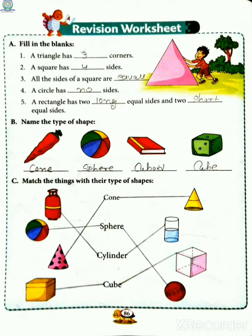So circle has no sides. Number 5: A rectangle has two long equal sides and 2 short equal sides. Yarni rectangle ki do long equal sides hooti hai and 2 short equal sides hooti hai. Exercise B - Name the type of shape.